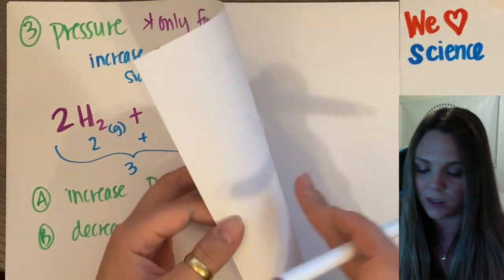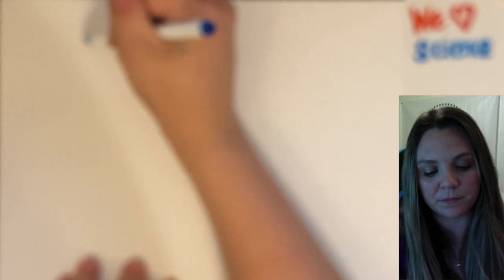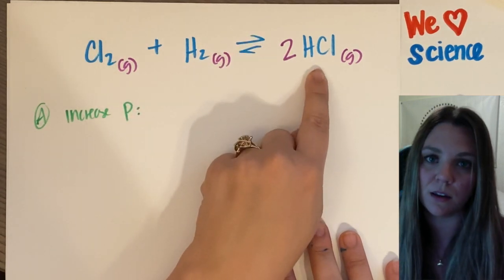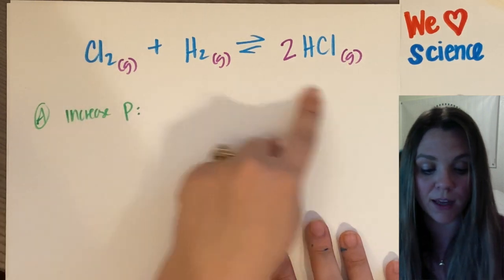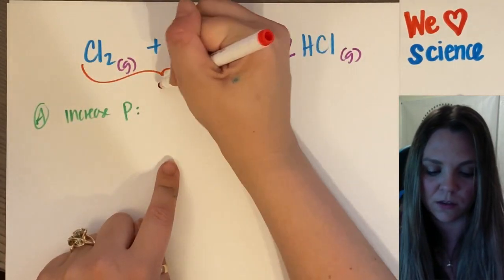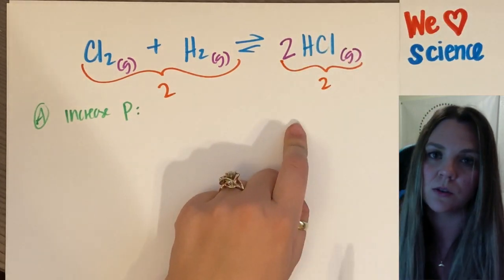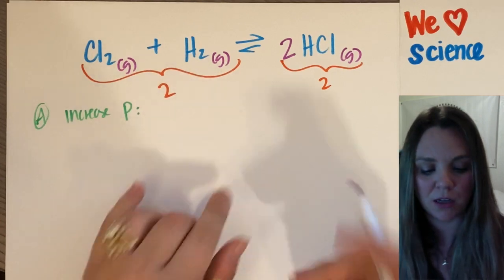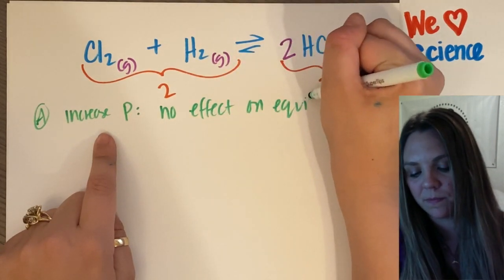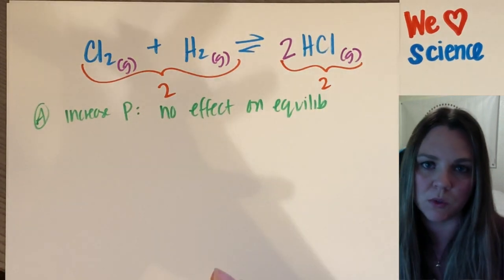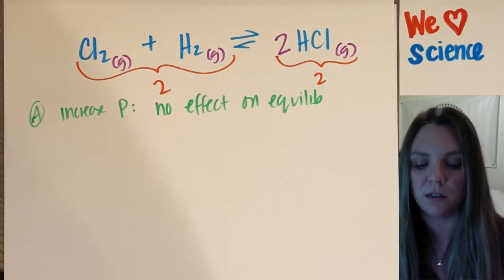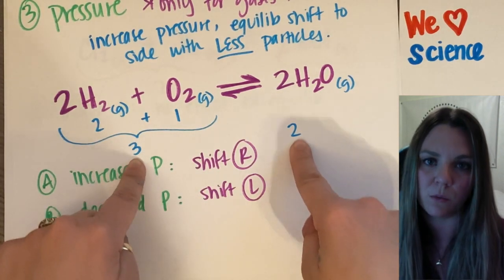One last tricky example: Cl₂ gas plus H₂ gas react in an equilibrium to make HCl gas. It says increase pressure — I count up my gases. The reactant side has one plus one, a total of two. The product side also has a total of two. No change — if I increase the pressure, no effect on equilibrium, because both sides have the same amount of gas particles. It doesn't matter. If both sides have the same number, pressure won't shift the equilibrium.